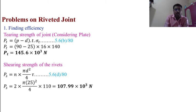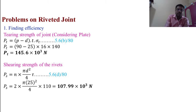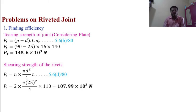Tearing strength of the joint considering the plate: PT = (P − d) × t × σT — equation 5.6B, page 80. PT = (90 − 25) × 16 × 140 = 145.6 × 10³ N.